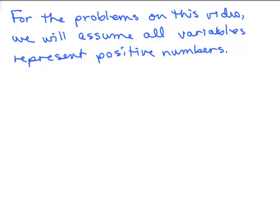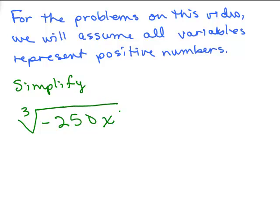To make it easy so we don't have to use absolute value signs when working with variables, we're going to assume for the rest of the problems that the variables represent positive numbers. Now we're going to simplify some problems that aren't perfect squares or perfect cubes. Let's say we've got the cube root of negative 250x to the 6th, y to the 10th. We need to find some perfect cubes.